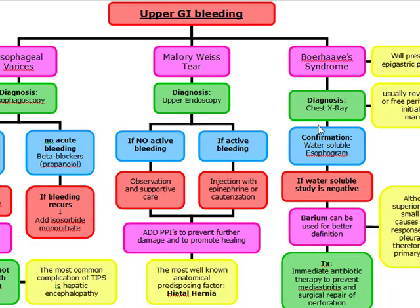On the chest X-ray of Boerhaave's, it usually reveals mediastinal or free peritoneal air as the initial radiologic manifestation. We then confirm with a water-soluble esophagram.